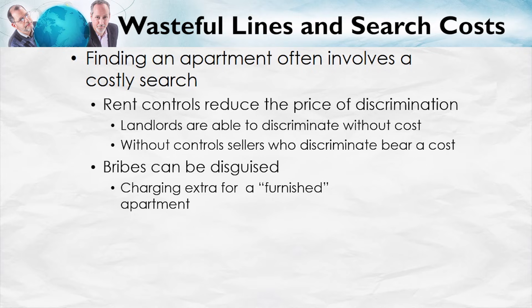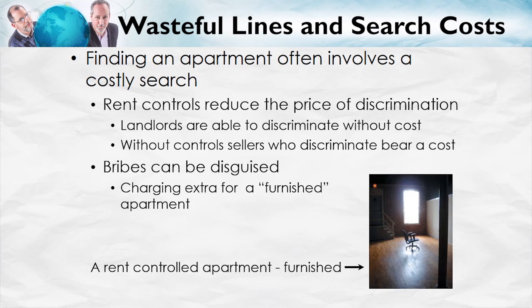Another very common effect of rent controls is paying bribes to get a rent-controlled apartment. Bribes are of course illegal, but there are ways of disguising the bribe. One way, for example, would be to charge extra for a furnished apartment. What does a furnished apartment look like in New York City for a rent-controlled apartment? It looks like this — that's a furnished apartment. It's a way of paying a bribe under the table.